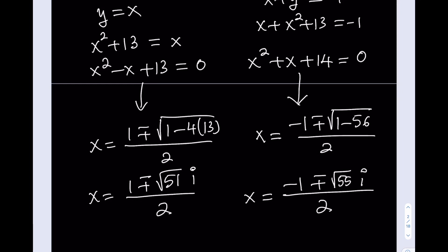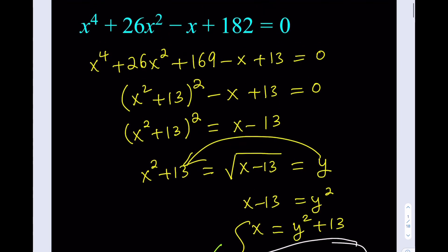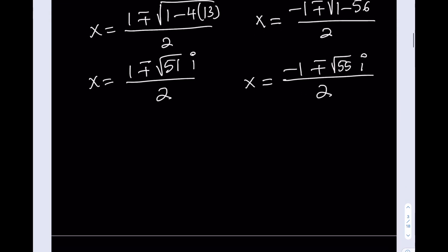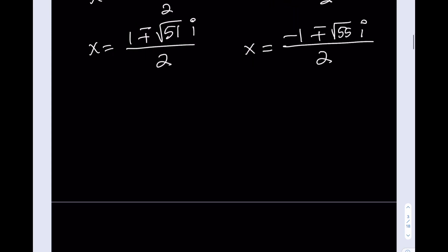We found all four solutions. Unfortunately none of them are real, and that can happen with quartic equations because they are of even degree and don't have to have real solutions. Now let's talk about the second method. My original equation is x to the fourth plus 26x squared minus x plus 182 equals zero. We don't know if we have real solutions at the beginning, and we could check for rational solutions, but that's not what we're going to do here.